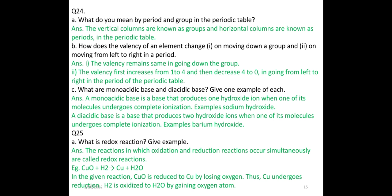What is a redox reaction? Give an example. The reaction in which oxidation and reduction occur simultaneously is called a redox reaction. For example: copper oxide + hydrogen → copper + water. In this reaction, copper oxide is reduced to copper by losing oxygen (copper undergoes reduction), and hydrogen is oxidized to water by gaining an oxygen atom.